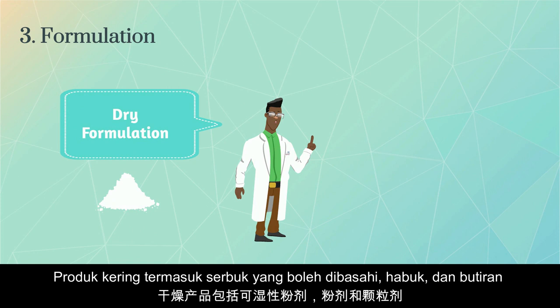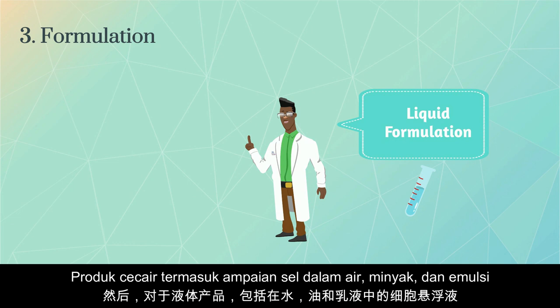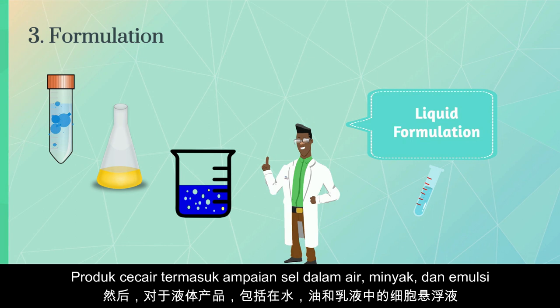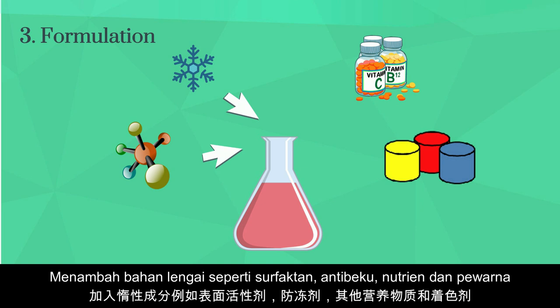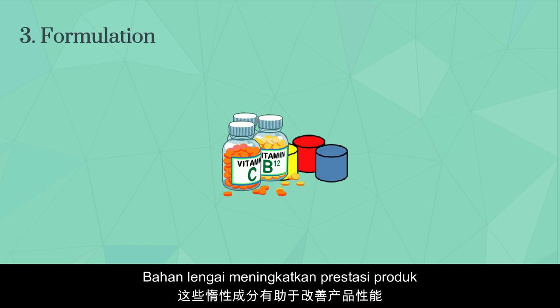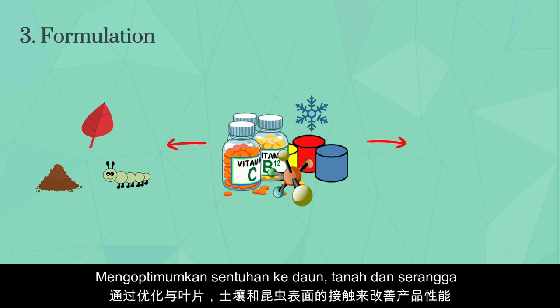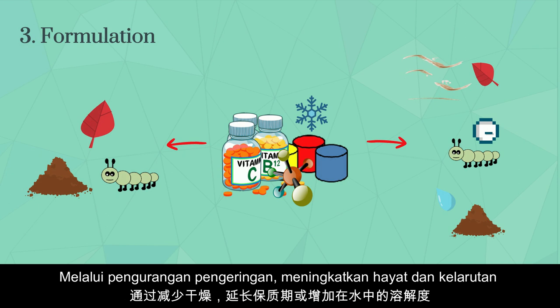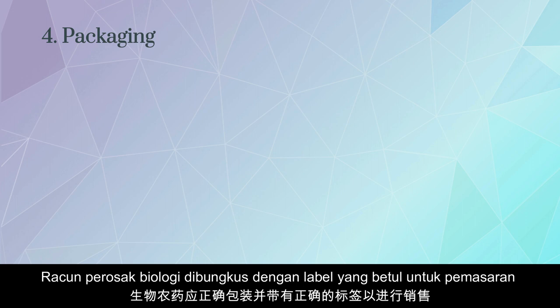Dry products include wettable powders, dusts, and granules. Liquid products include cell suspensions in water, oils, and emulsions. This step also involves adding inert ingredients such as surfactants, antifreeze compounds, additional nutrients, and coloring agents. These inert ingredients contribute to improving product performance by optimizing contact to leaf, soil, and insect surfaces, reducing desiccation, increasing shelf life, or increasing solubility in water. The last step is packaging — biopesticides are properly packaged with correct labeling for marketing.